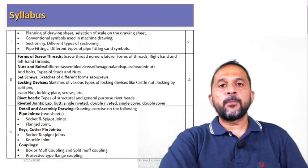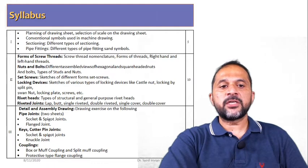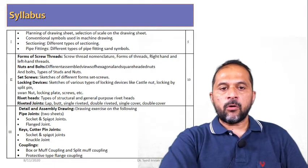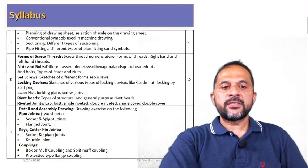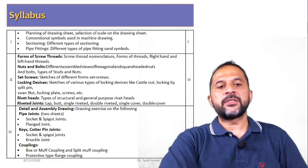The very important and basic component is nut and bolt. We will try to draw nut and bolt, then screw sets, then locking devices, rivets and riveted joints. This is the second unit.